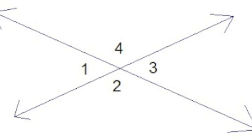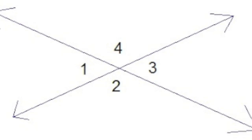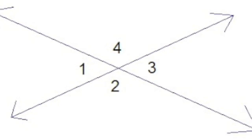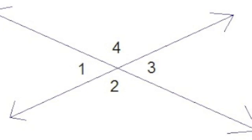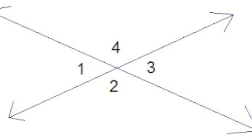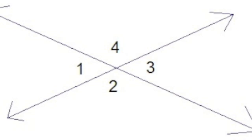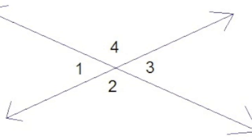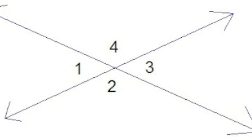In this diagram, angles 2 and 4 are vertical, as are 1 and 3. Angles 1 and 2 are adjacent angles, as are 2 and 3, 3 and 4, and 1 and 4.